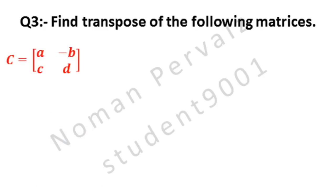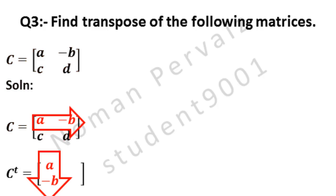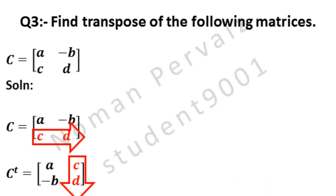Next, we have matrix C having 4 elements which are A, minus B, C, and D. C-transpose means transpose of C. The 1st row, which is A and minus B, is converted to the 1st column. The 2nd row, which is C and D, is converted to the 2nd column. Hence this is the transpose of matrix C.